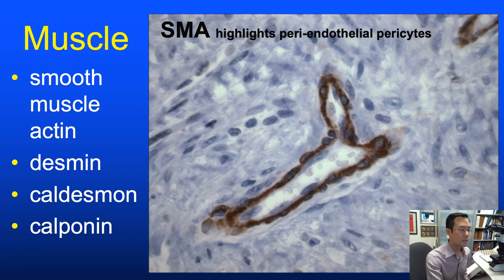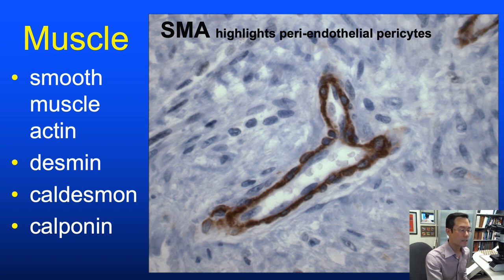Muscle fibers and tumors exhibiting myoid differentiation can be identified by myoid markers. In dermatopathology, SMA (smooth muscle actin) is most commonly used since most cutaneous myoid tumors are smooth muscle derived. For poorly differentiated tumors, desmin positivity is often required to consider leiomyosarcoma. SMA can also serve as a vascular marker for well-differentiated blood vessels, as it is positive in pericytes—periendothelial cells that are modified myofibroblasts.